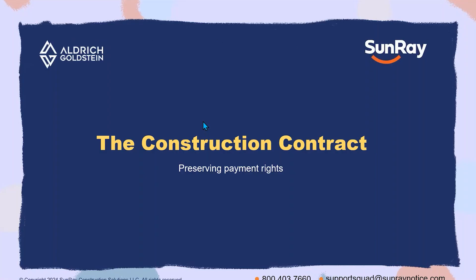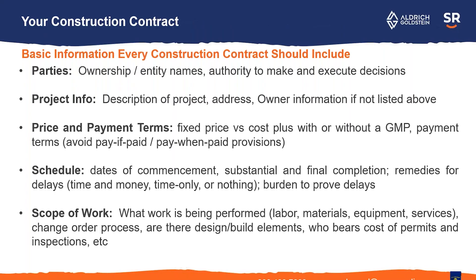The first thing I want to go over is the construction contract. Big commercial projects, there's almost always a contract. A lot of times on smaller residential projects, the contract ends up being just the contractor's bid that's signed by the owner. That can work if you have terms and conditions that are part of your bid. But there are some basic elements that you need to have and that are important to have to preserve your lien rights.